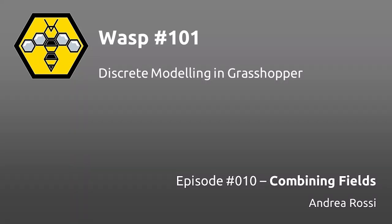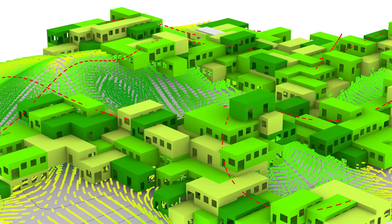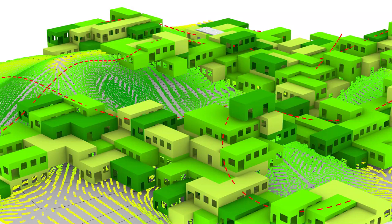Hello everyone and welcome to WASP 101. I'm Andrea Rossi, the developer of WASP. In the previous tutorials we have been learning different techniques to create various kinds of fields starting from different types of geometry — how to start from curves, surfaces, and volumes. In this tutorial I want to look at all of this together and look at how we can take different fields generated in different ways and combine their values to create a composite field that will allow us to have more detailed control over the geometry.